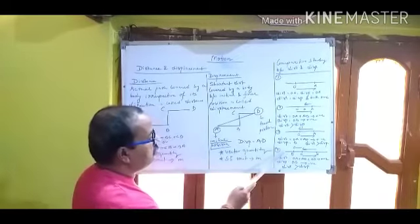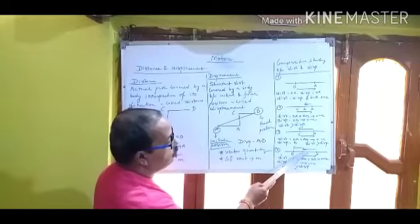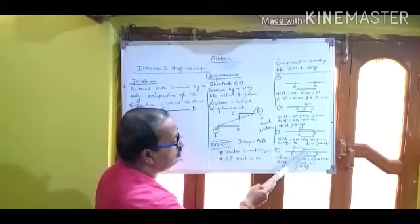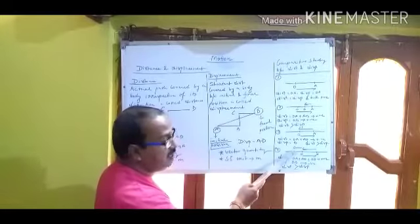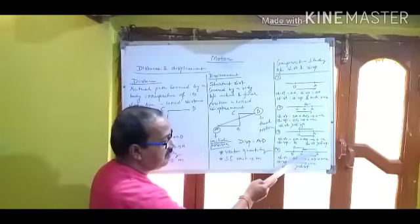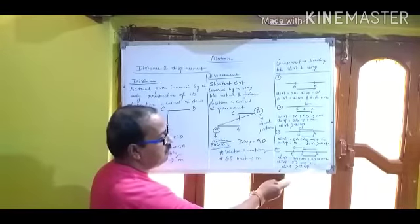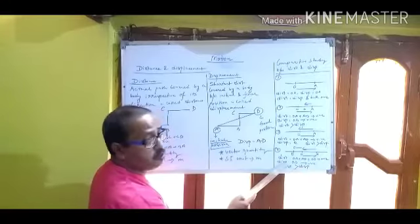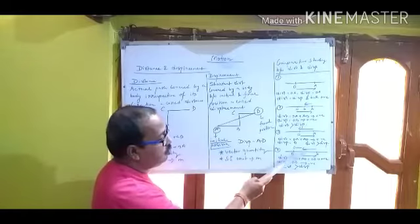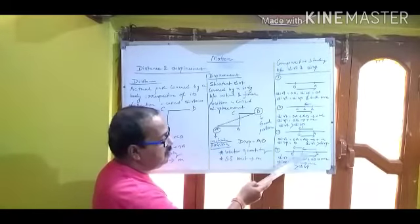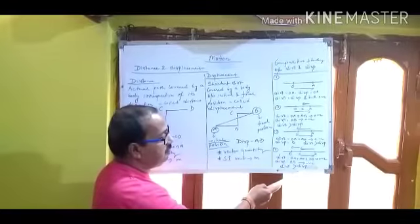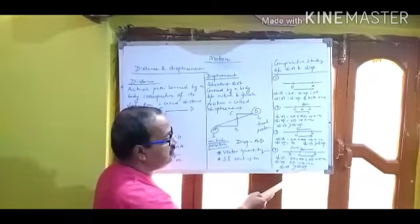Now consider the fourth and final case. The body starts from O, goes to A, returns to O, and then goes to B. The total distance covered is OA plus AO plus OB, which is positive. The displacement — initial position is O and final position is B. OB is to the left of the origin, so displacement is taken as negative. Here, distance is greater than displacement.